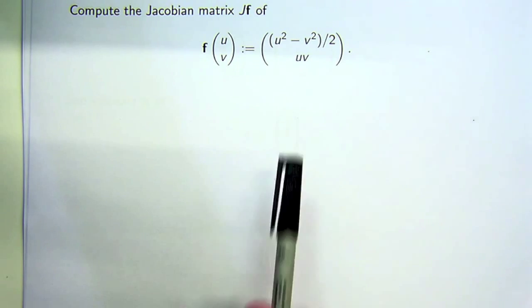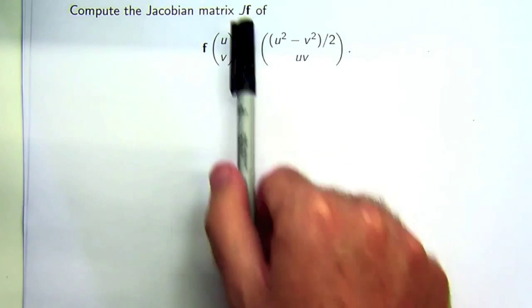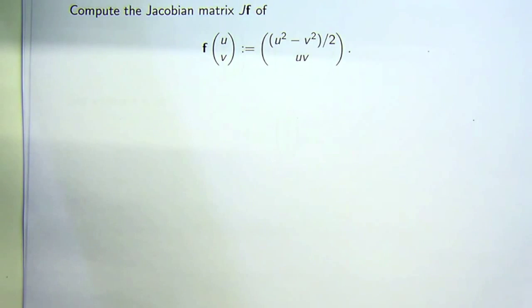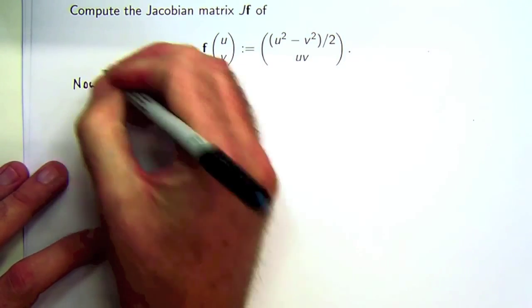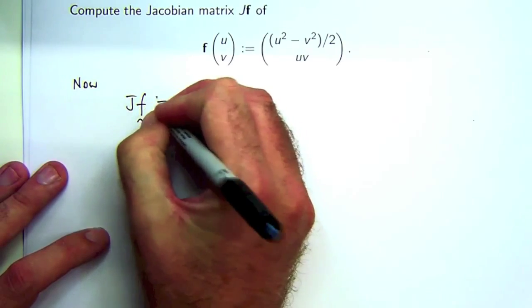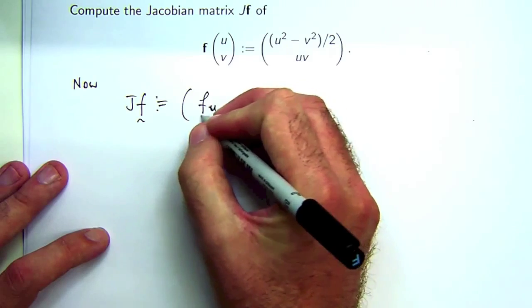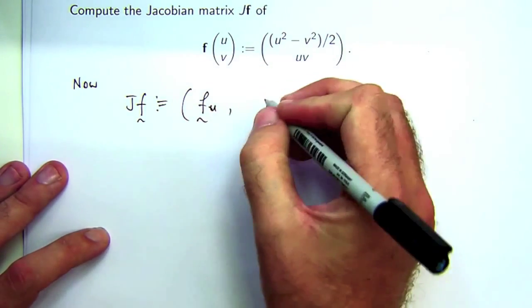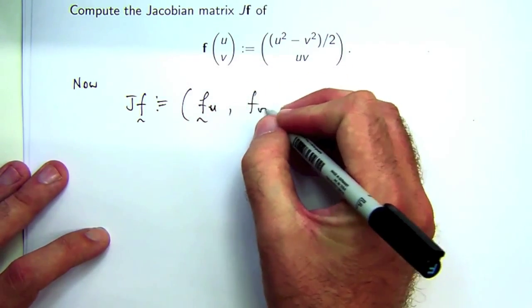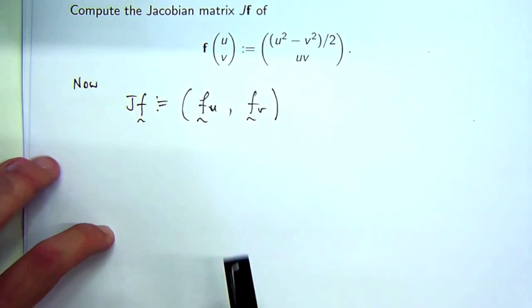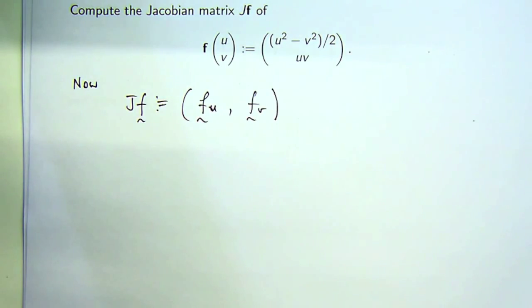So to compute the Jacobian, it's basically a matrix where the columns are partial derivatives associated with a vector f. Let's write that down. This is the way I like to do it. You may have seen other ways of doing it. I'm putting a comma in here to separate these things into columns.